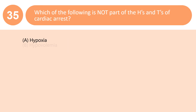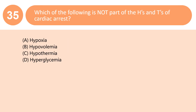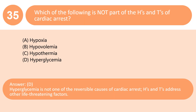Which of the following is not part of the H's and T's of cardiac arrest? A. Hypoxia. B. Hypovolemia. C. Hypothermia. D. Hyperglycemia. Answer: D. Hyperglycemia is not one of the reversible causes of cardiac arrest. The H's and T's address other life-threatening factors.